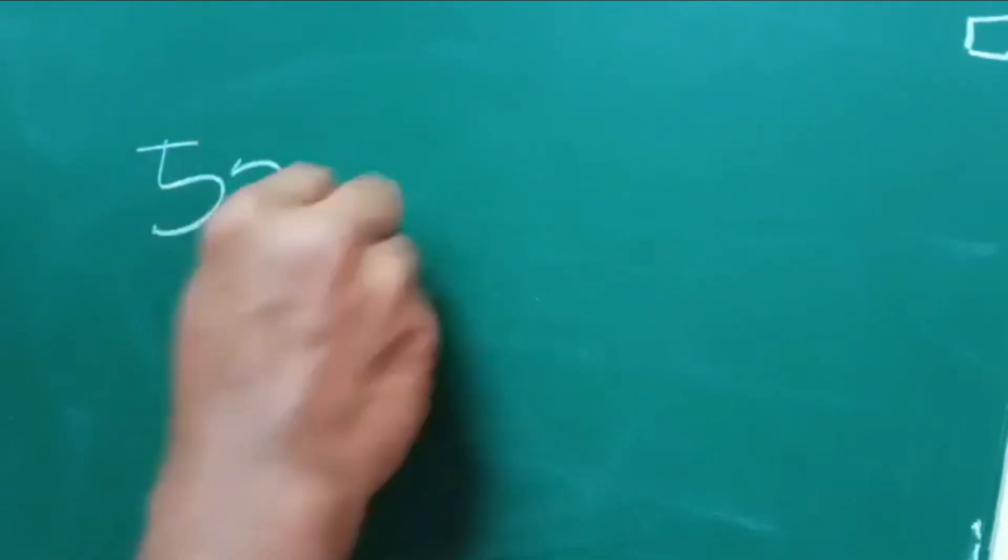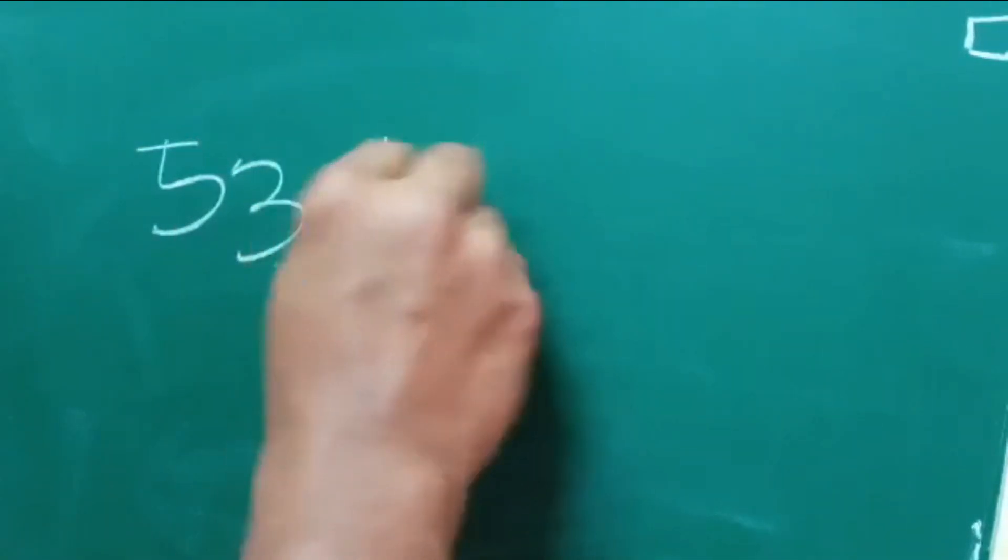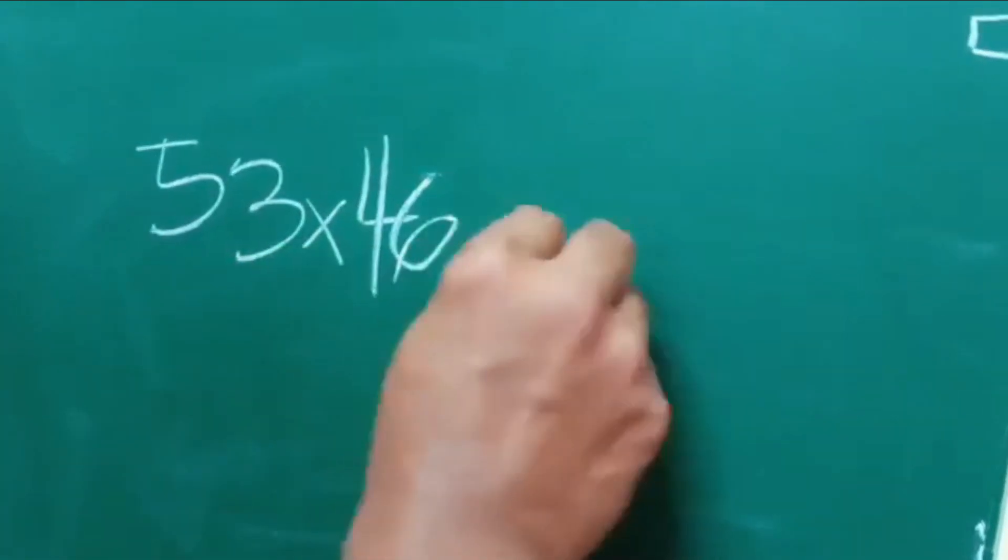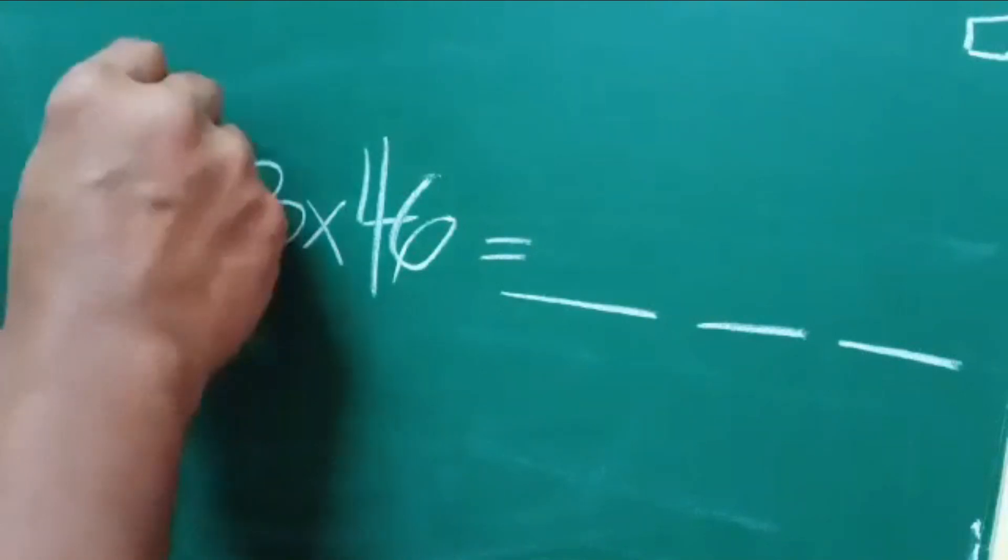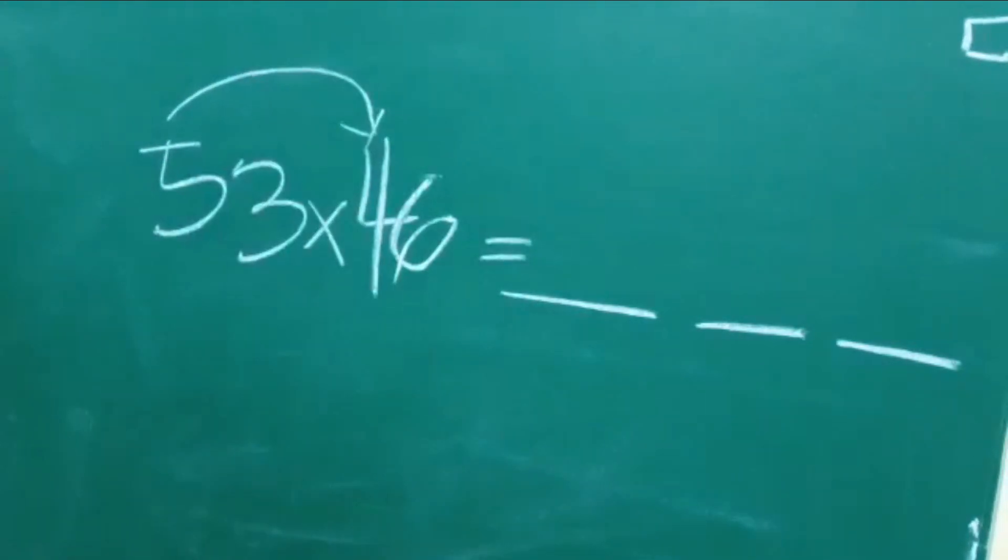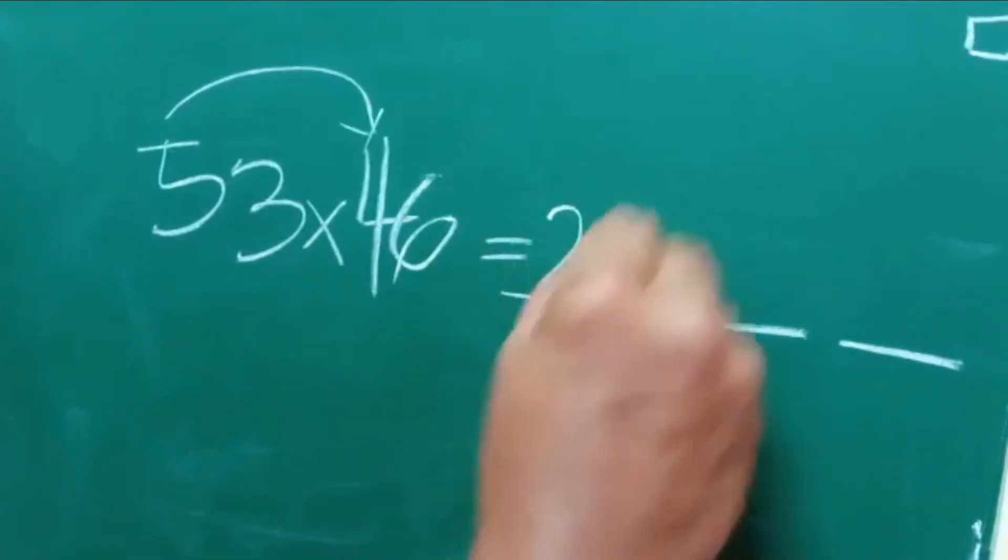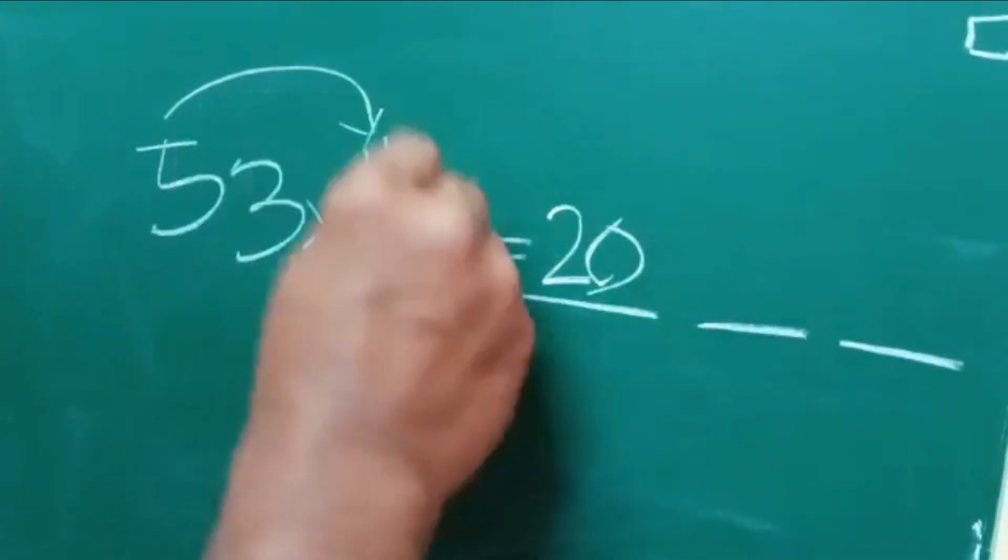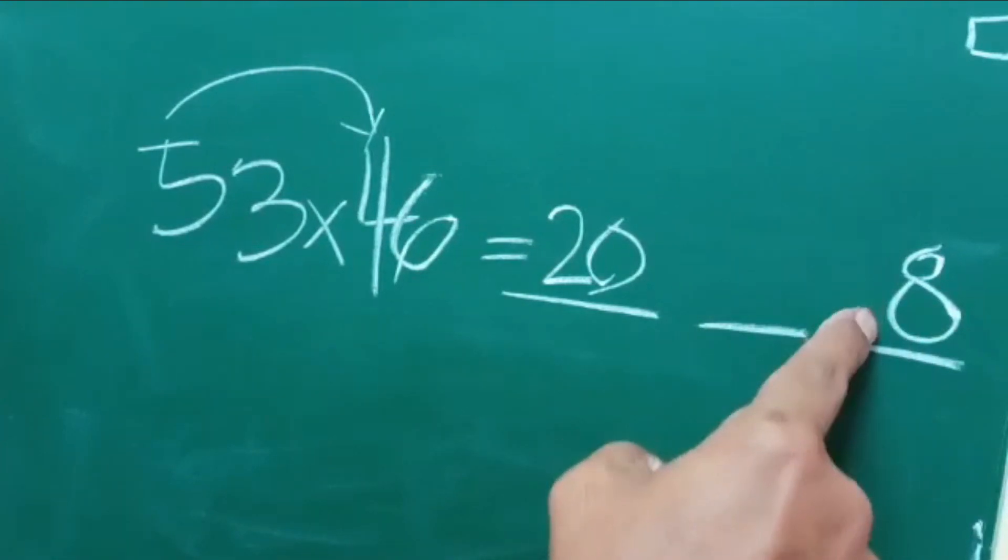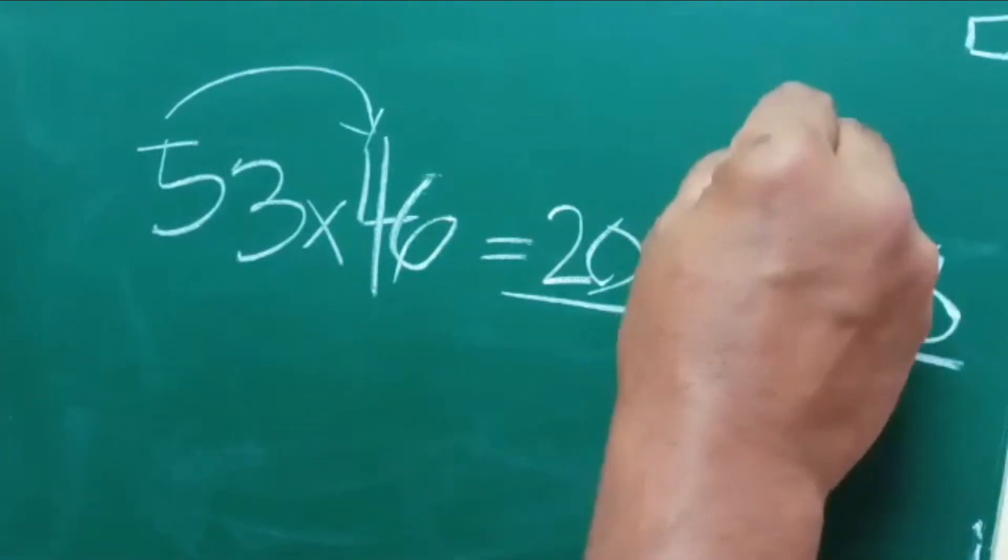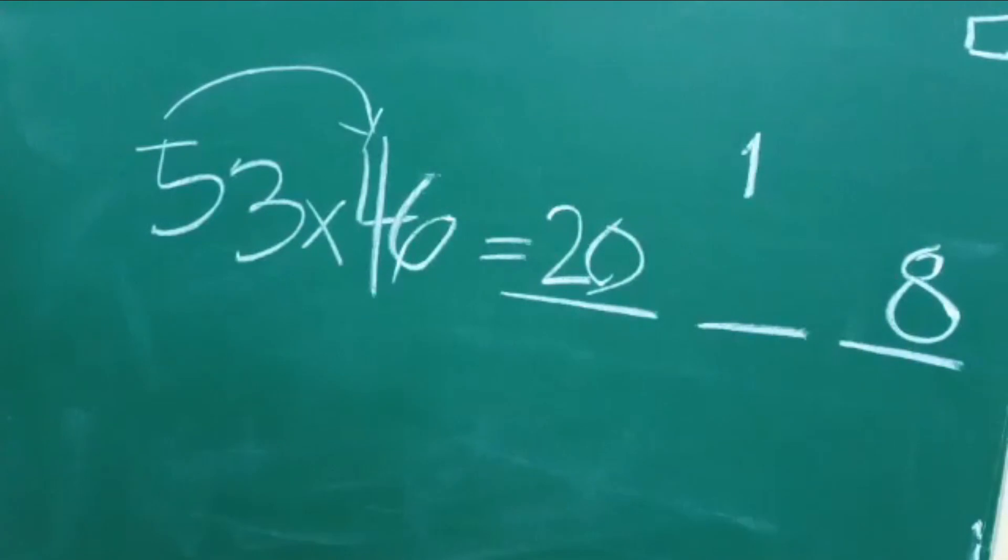So let's go again for a more complex two numbers which are 53 times 46. Same, we follow the same principle. 5 times 4 is equal to 20. 3 times 6 is equal to 18, but we cannot immediately put the 18 here because we have to put the carry one here.